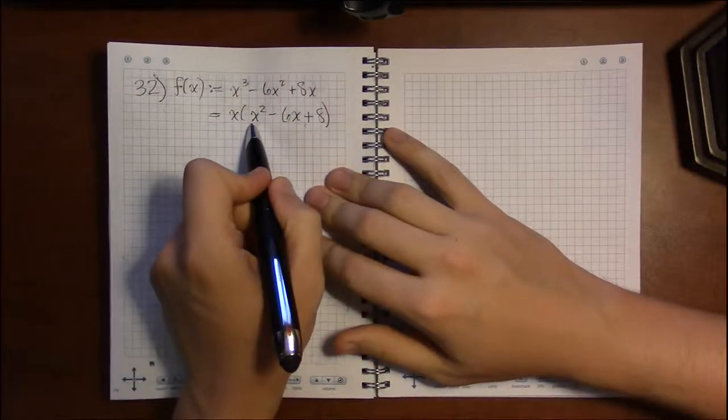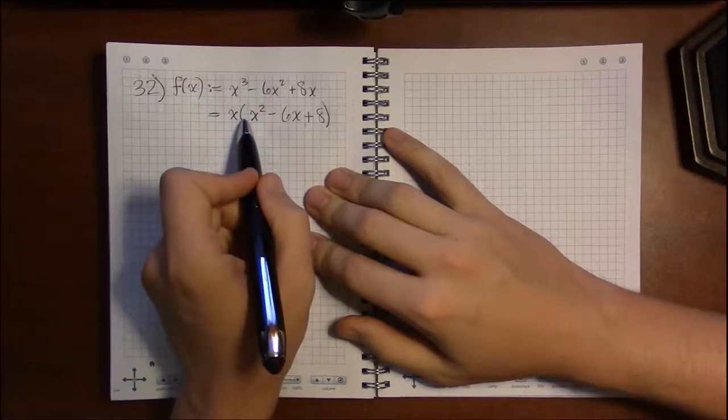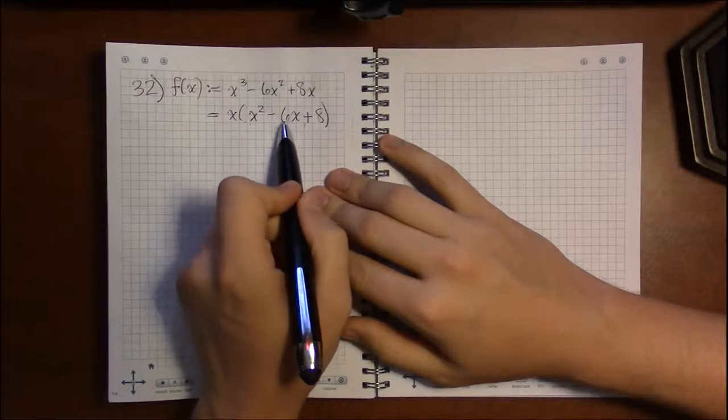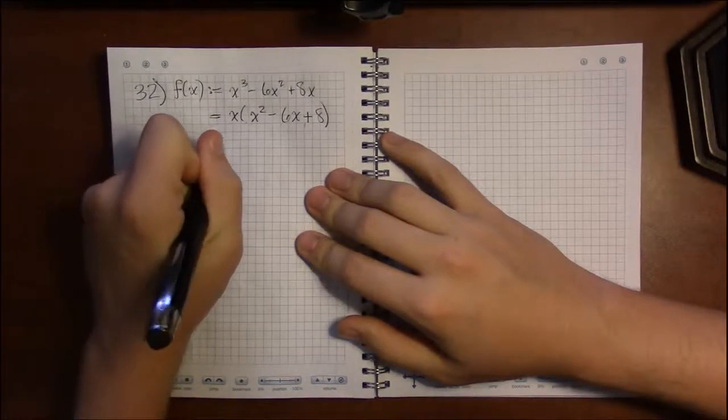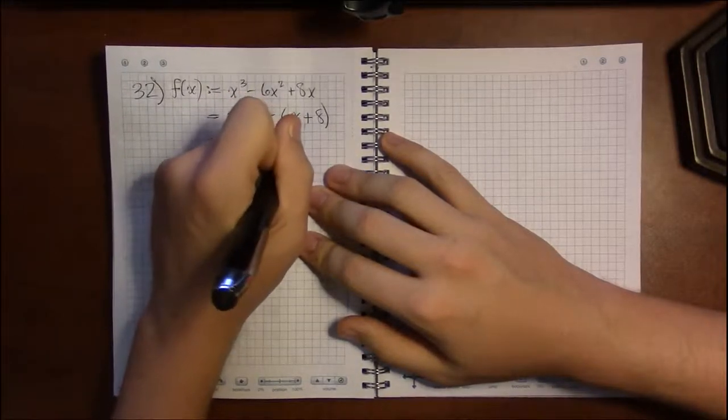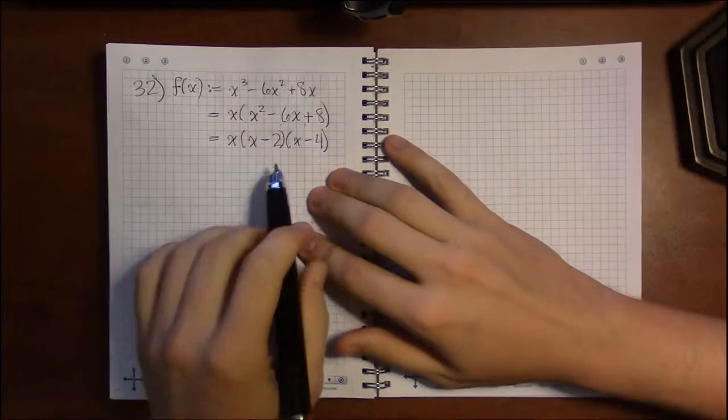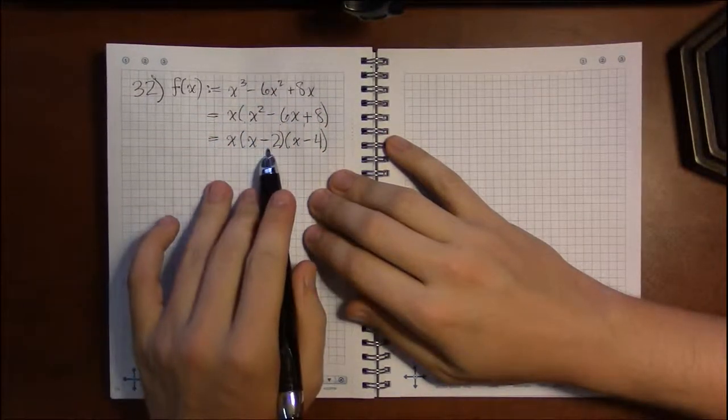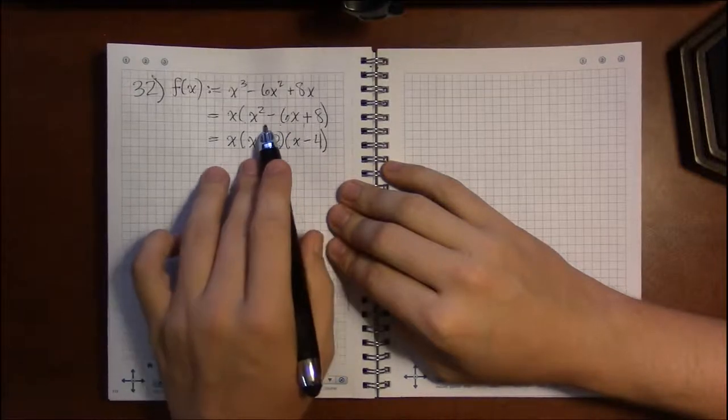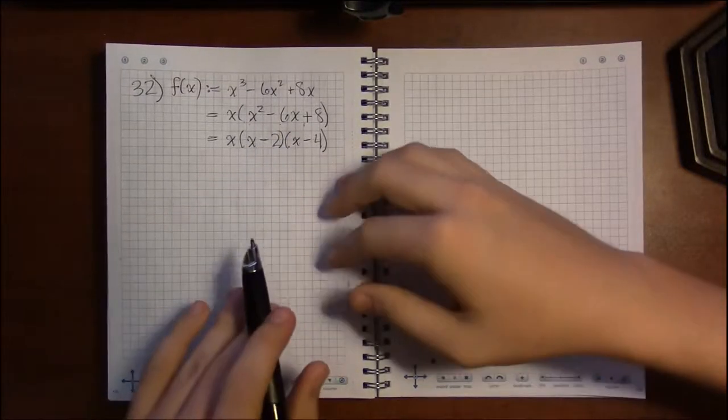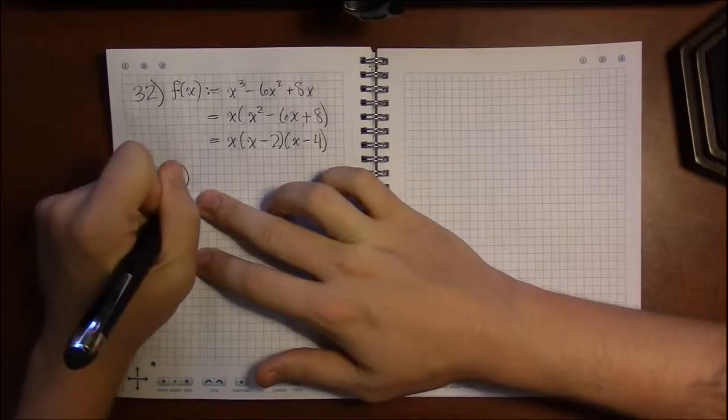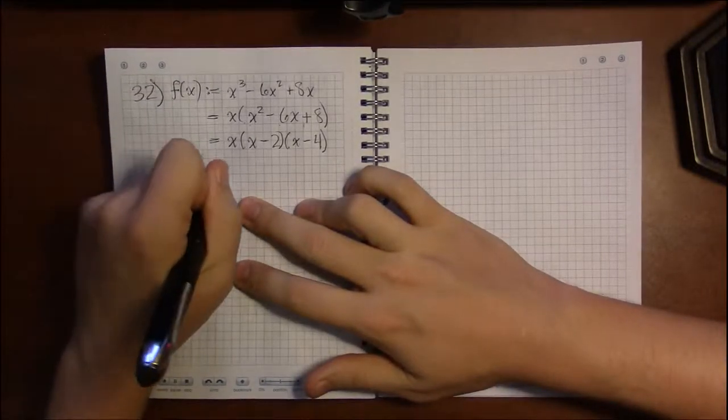Then I have a quadratic. So factoring a quadratic with a leading coefficient of 1, two numbers that multiply to 8 and add to minus 6 sounds like minus 2 and minus 4. So if I have (x-2) times (x-4), then minus 2 times minus 4 is a positive 8, minus 4x plus minus 2x is a minus 6, and x times x is x squared. So this will work out. So this is a fully factored form and we need this to answer part A about the x-intercepts with multiplicities.